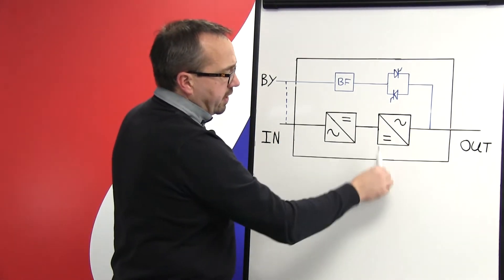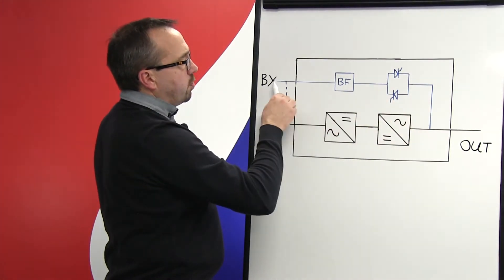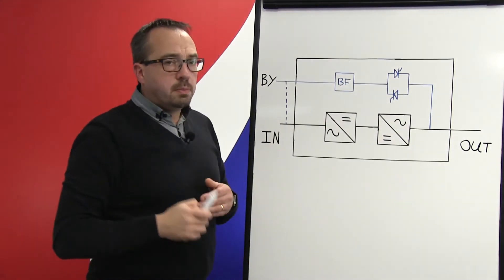If there's no main supply and the UPS is supplying the connected load from the batteries, we don't want any power trying to flow back through the static bypass switch, and therefore the back feed protection device prevents this.